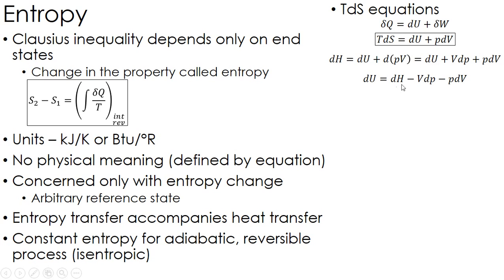get DU equals DH minus VDP. And then I'll take this DU, plug it back into the above TDS equation, and basically PDV cancels out. And I get TDS equals DH minus VDP.